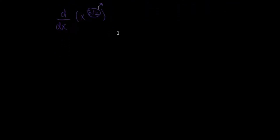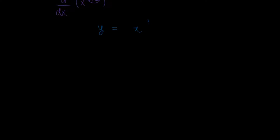Let's set up some variables: we will have y equals x to the 3 halves. Now once we have set this up, there is no way we can just put d over dx on both sides, since that's just not something that we know. Instead, what we can do is, to simplify things a bit, we can square both sides.